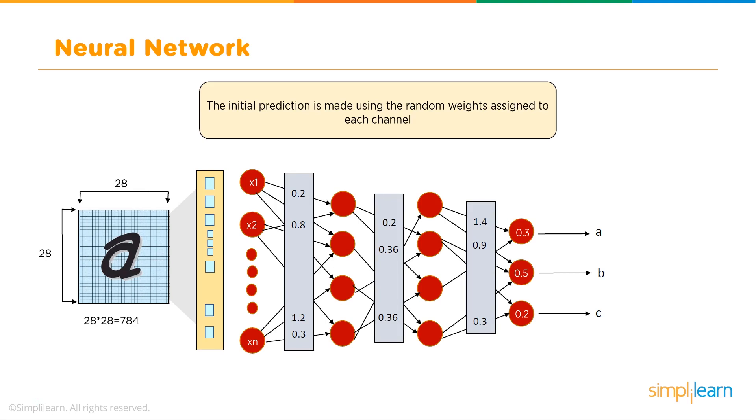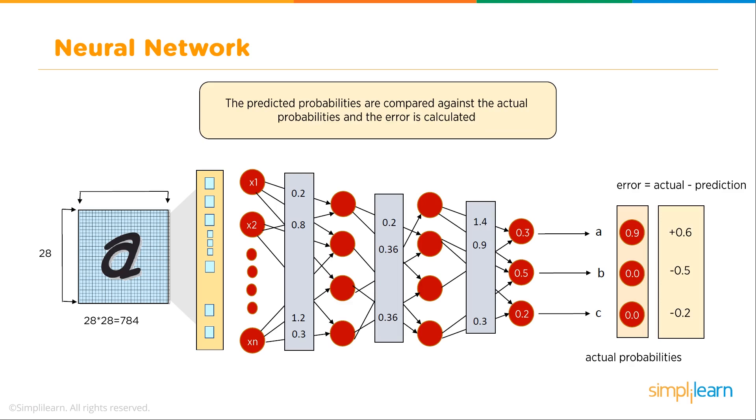We have our forward propagation. Each node's values are added up and added up going across. Our network predicts the input to be B with a probability of 0.5. The predicted probabilities are compared against the actual probabilities and the errors calculated.